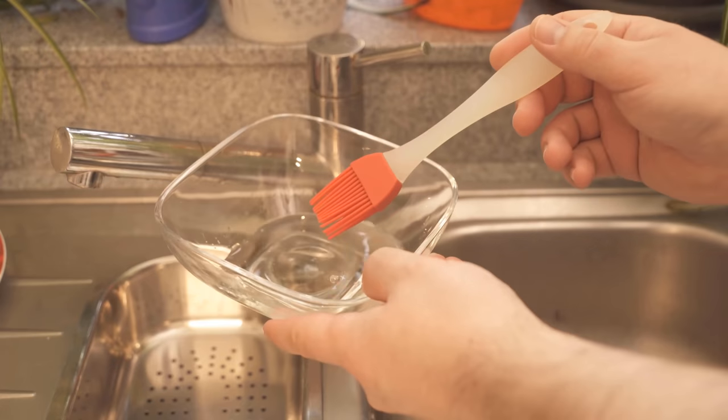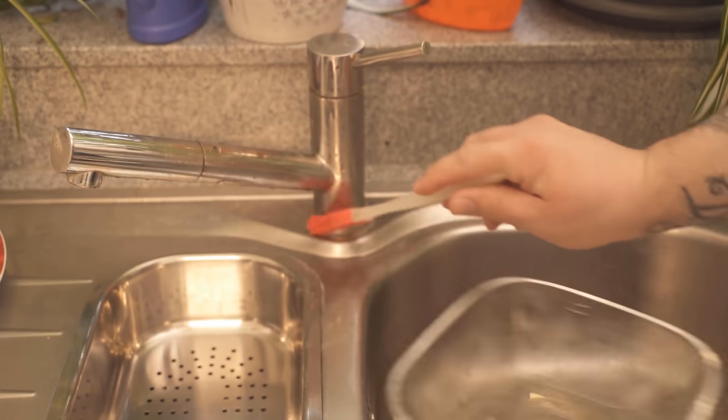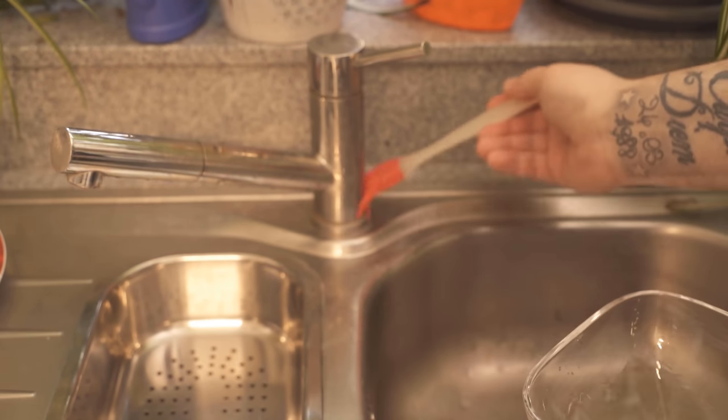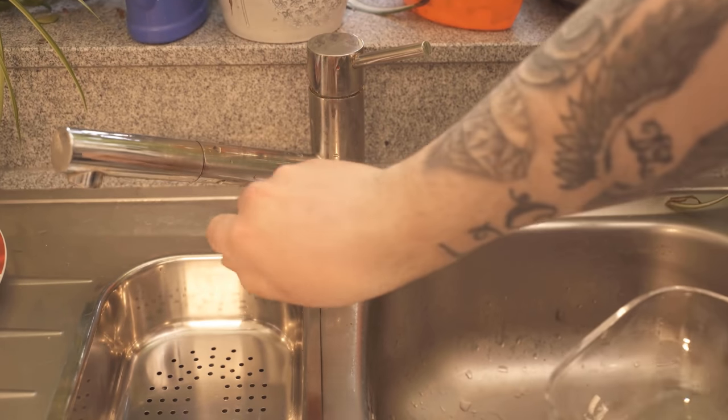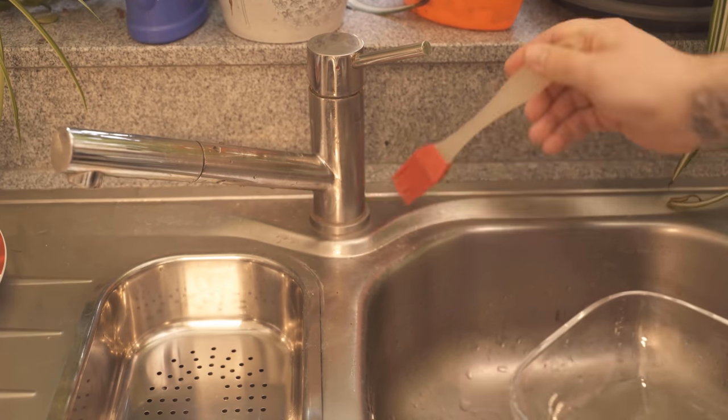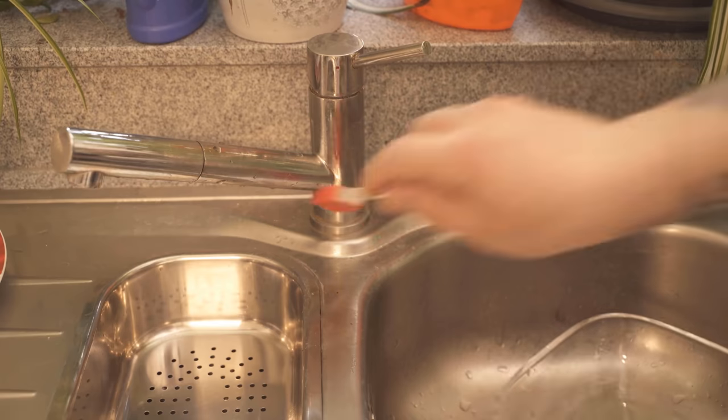We take a small bowl and fill it with vinegar. Now we take a brush or an old toothbrush and spread a little of the vinegar everywhere where we find these lime stains on the faucet. Even in small nooks and crannies you can distribute the vinegar quite well.